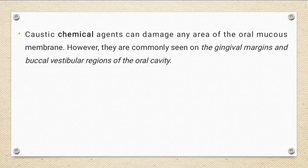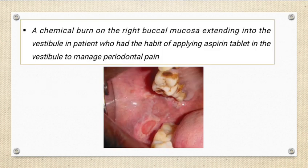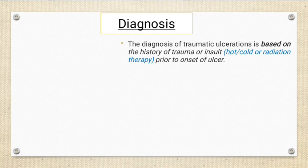A very common chemical agent causing oral ulceration is aspirin or paracetamol (panadol). This is found in the gingival margin and buccal vestibule regions of the oral cavity. A white pseudomembrane can be seen covering the ulcers caused by chemical agents. When removed, it leaves a raw ulcerated surface. Here you can see the typical presentation of aspirin tablet placement causing damage to the buccal mucosa in the vestibular area.